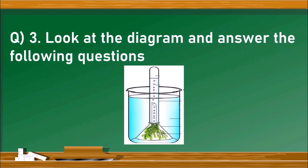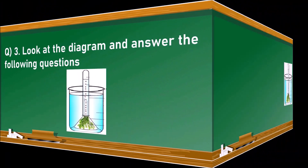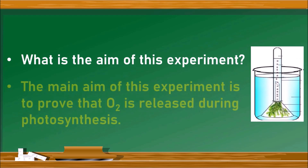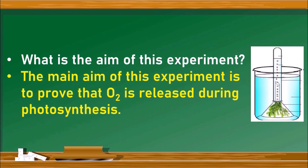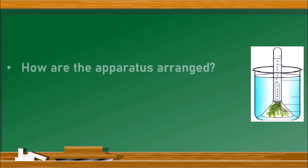The next experiment-based question: what is the aim of this experiment? The aim is to prove that oxygen is released during photosynthesis. Note: we should not call it the 'hydrilla experiment' — it is the experiment to prove that oxygen is released during photosynthesis. So always write the full aim, not just 'hydrilla experiment.'